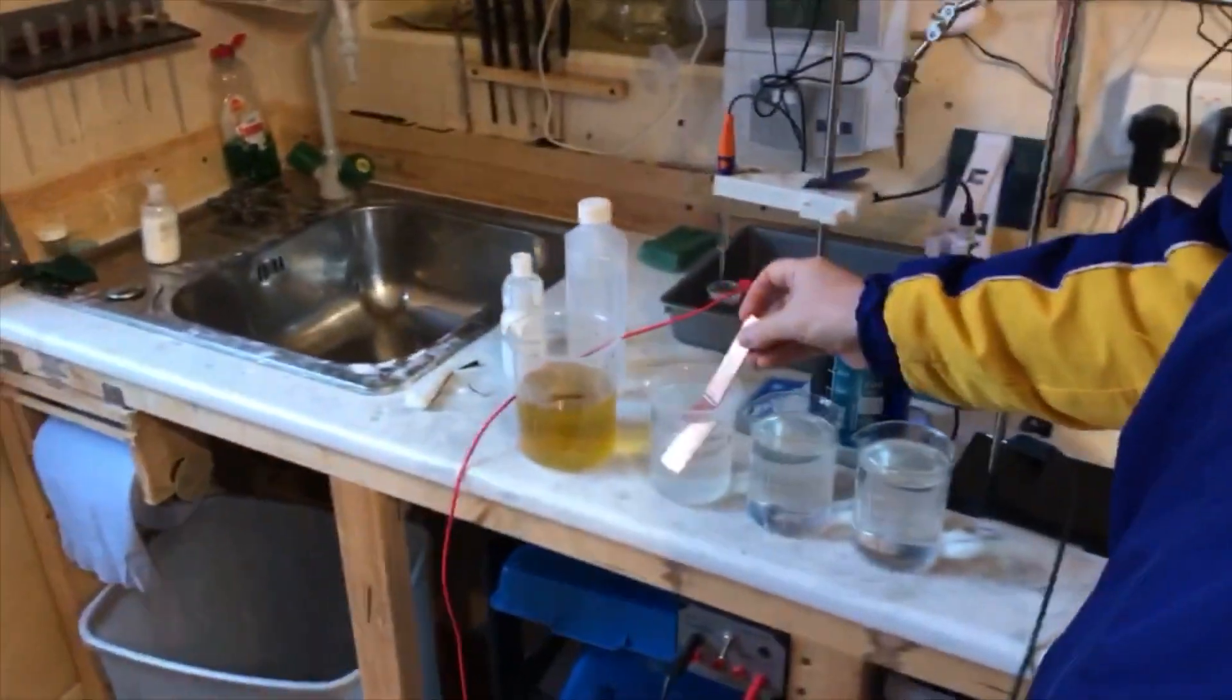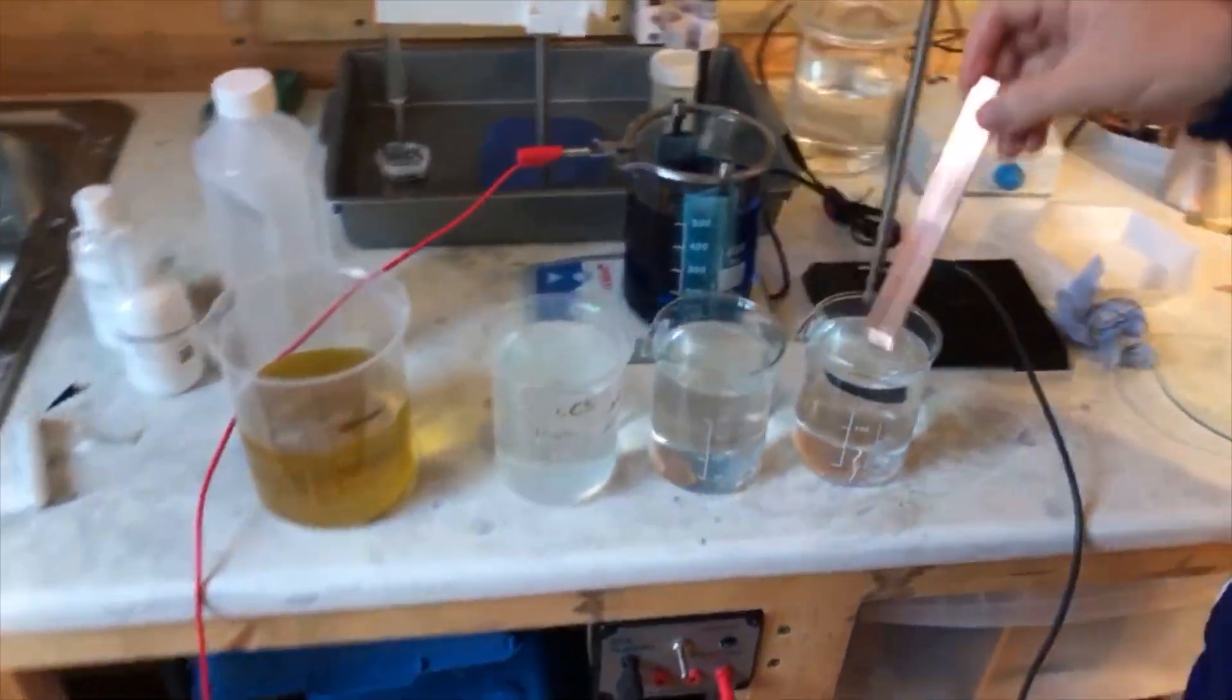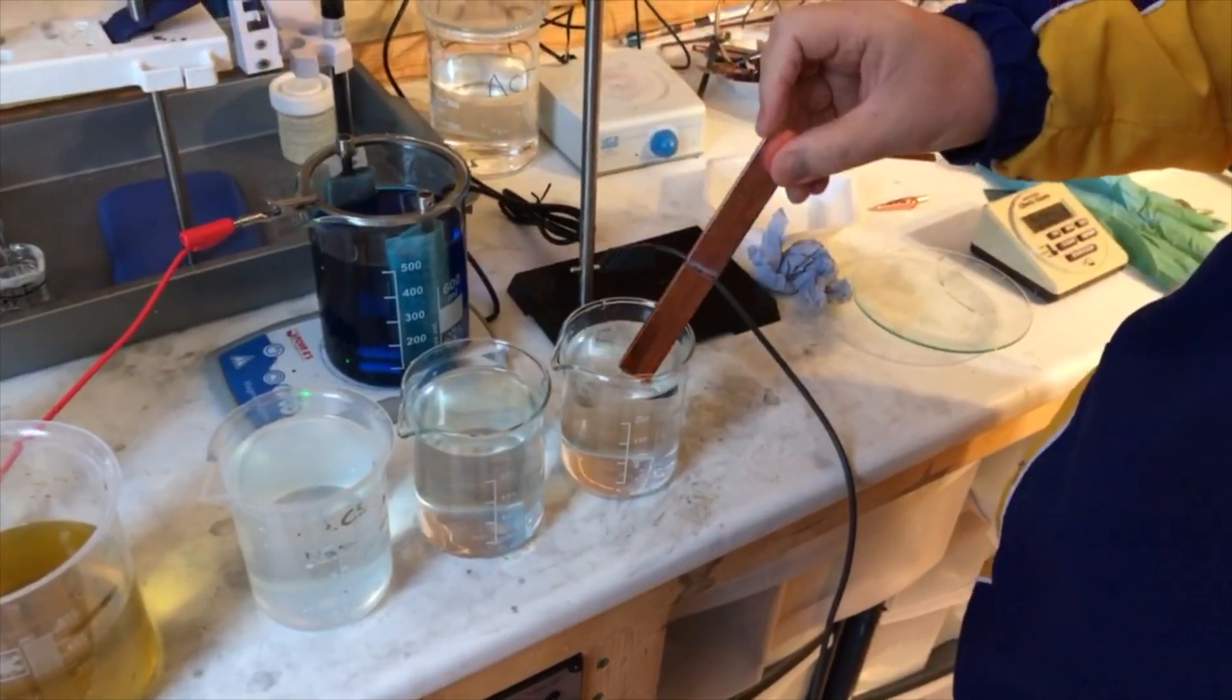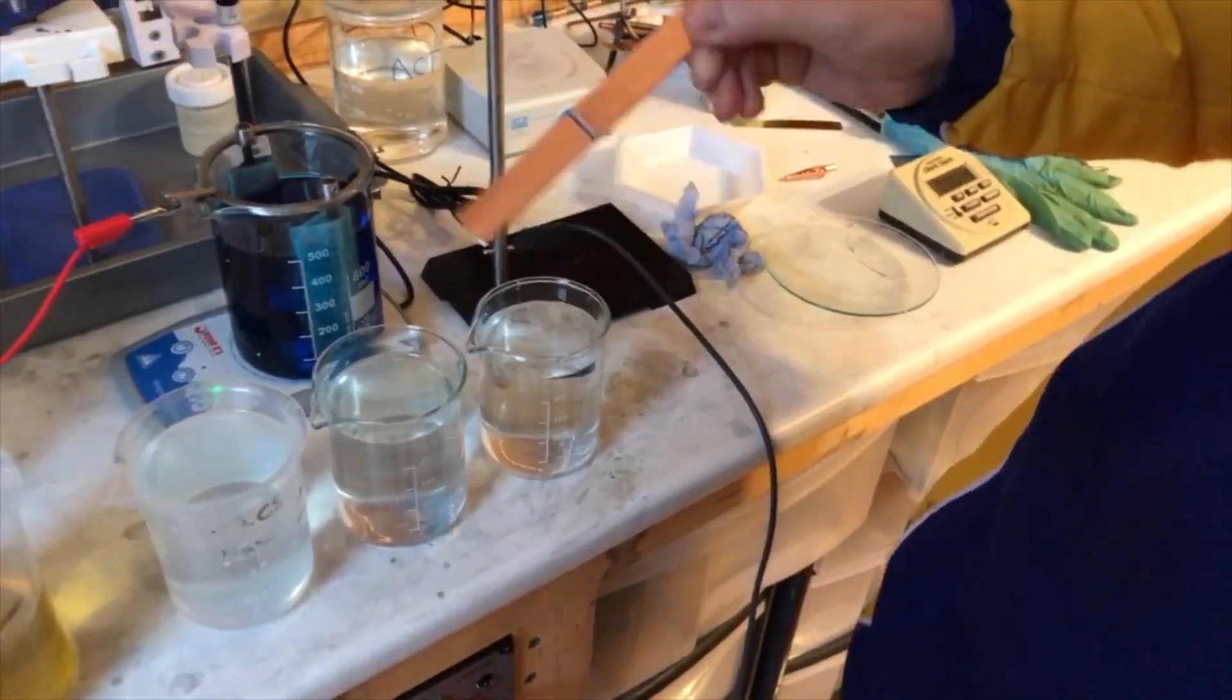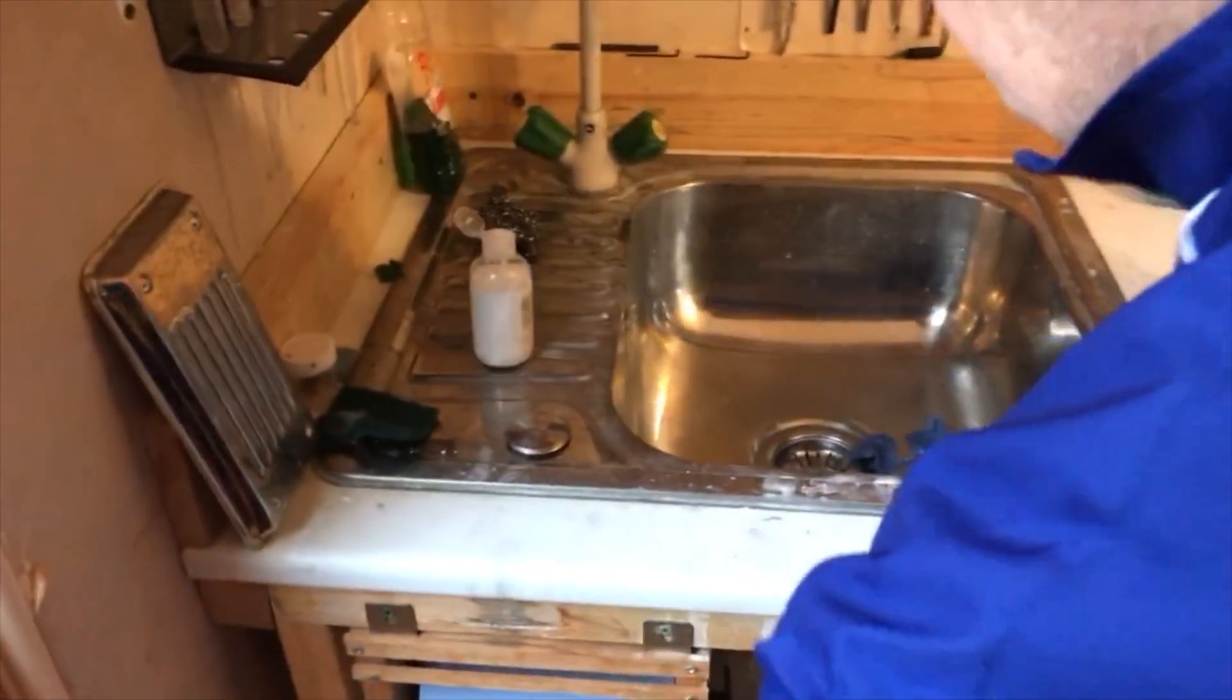You can now polish it if you want with a buffing wheel. You can brush plate if you want - nickel on there and gold if you want - brush plating or you can tank plate, whatever you want. Now the stage is done.